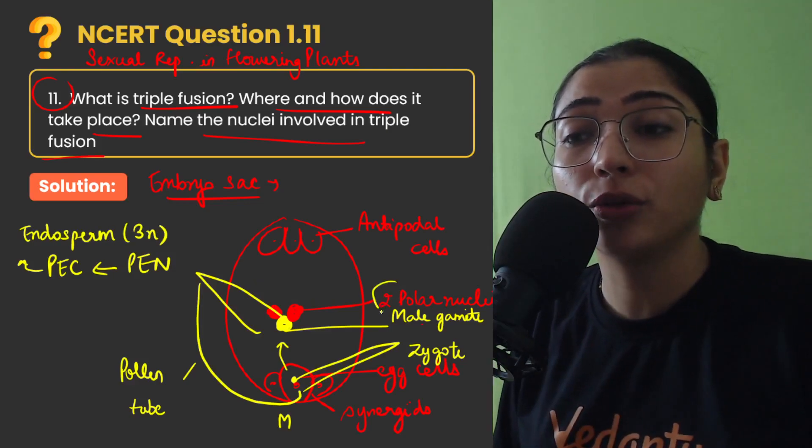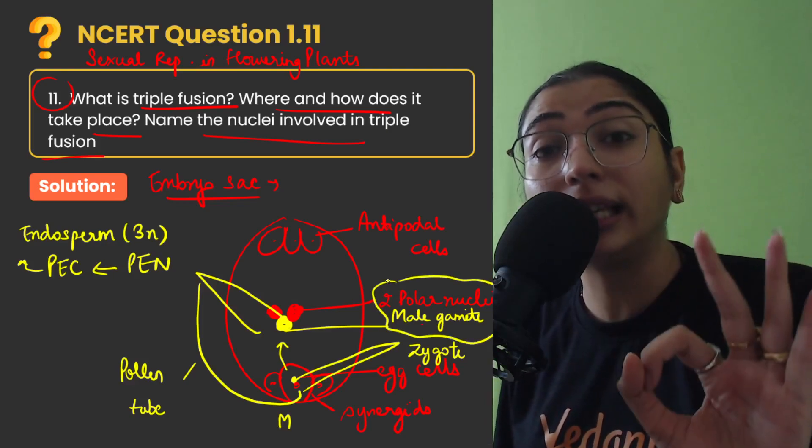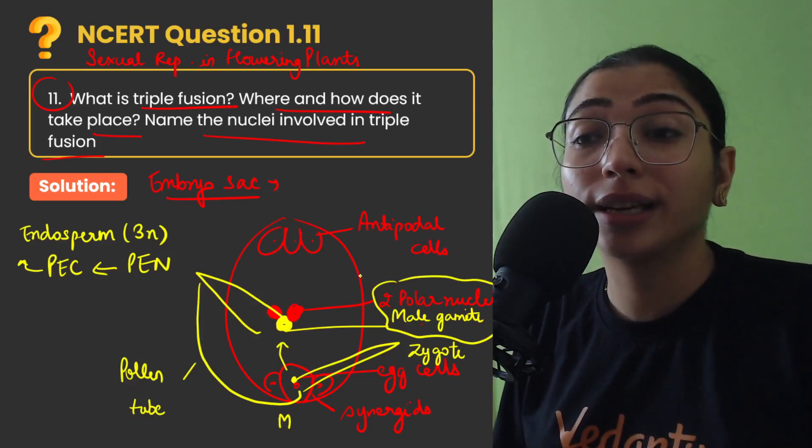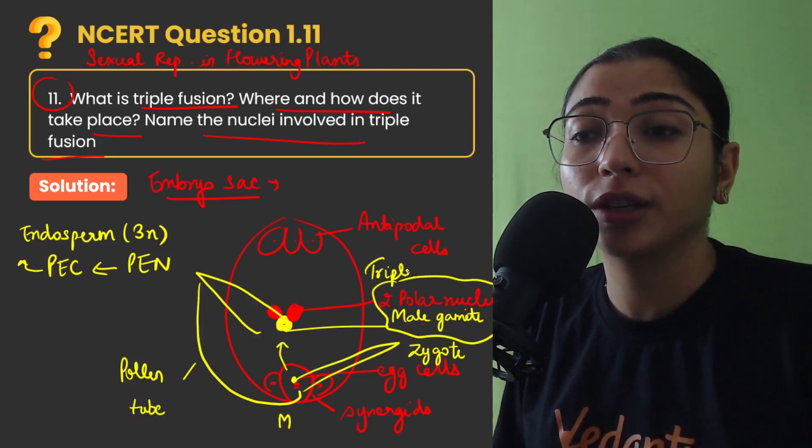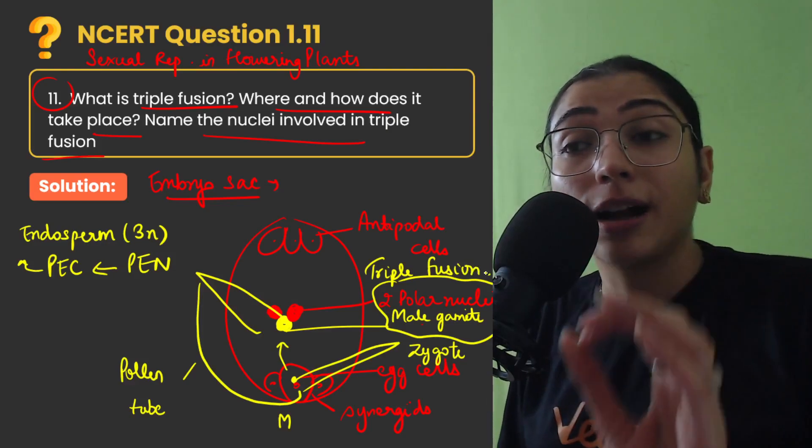So because here 2 polar nuclei and 1 male gamete fused, 3 nuclei fused, that's why this event is known as triple fusion.